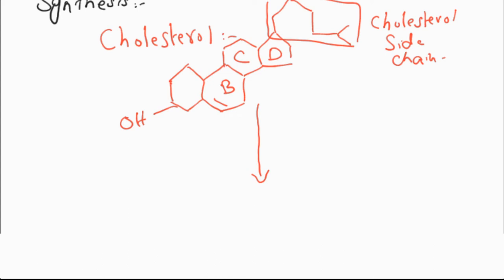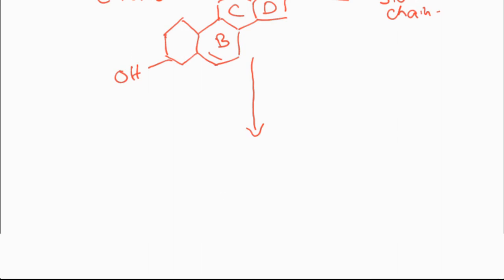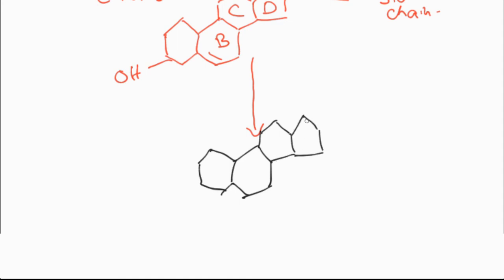The first enzymatic step is the conversion of cholesterol into pregnenolone, by the cleavage of the cholesterol side chain. The enzyme responsible for this conversion is cholesterol side chain cleavage enzyme.